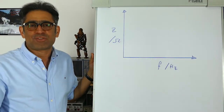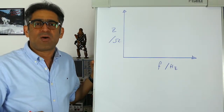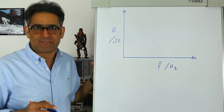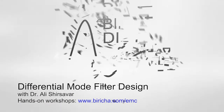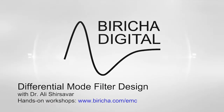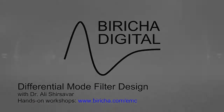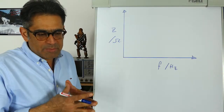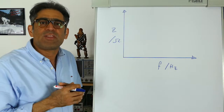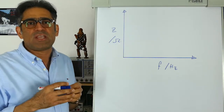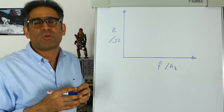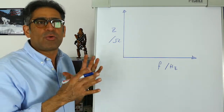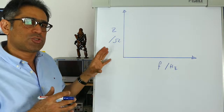My name is Ali Shersava and in this short video we're going to discuss how we go about designing a differential mode EMC filter. In order to design an EMC filter there are different strategies. The one that we're going to use is by using a fantastic tool which is called a reactance paper or an impedance paper. Before we show you the impedance paper, let us just look at the basics for one second.